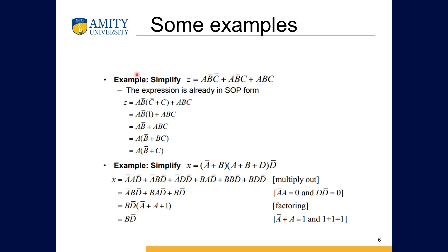Here are some examples of how we simplify Boolean algebra. If Z is an equation with variables A, B, and C, our first term has A, B-not, C-not — meaning A is one and B and C are zero. Then we have plus A, B-not, C, and plus ABC. The expression is solved by simplifying these terms.